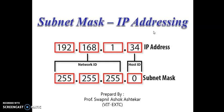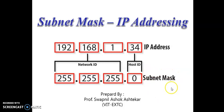Now why is there a need for subnet mask in classful IP addressing? As we know, whenever we consider an IP address it has two important parts: network ID and host ID. With the help of a subnet mask we retain the network ID and mask — meaning remove — the host ID. That is basically what subnet masking does.